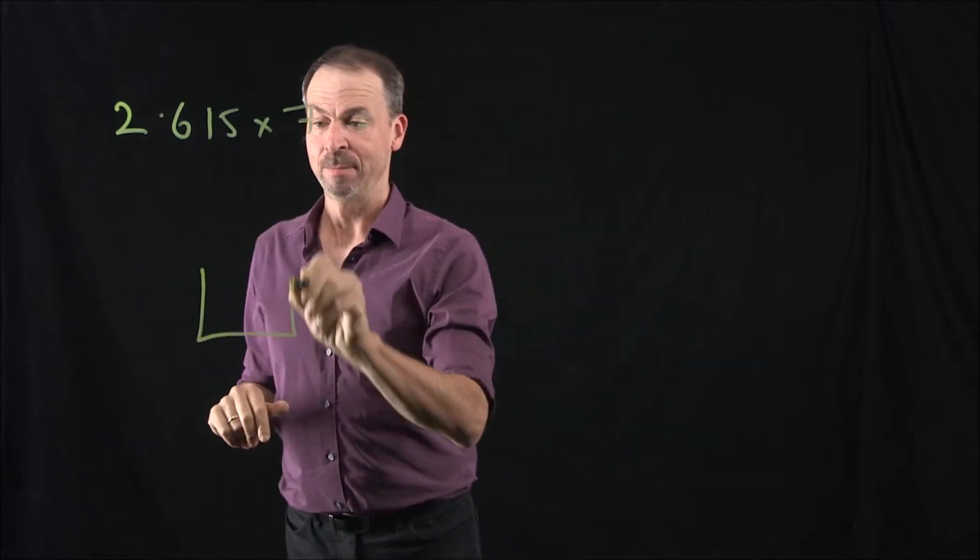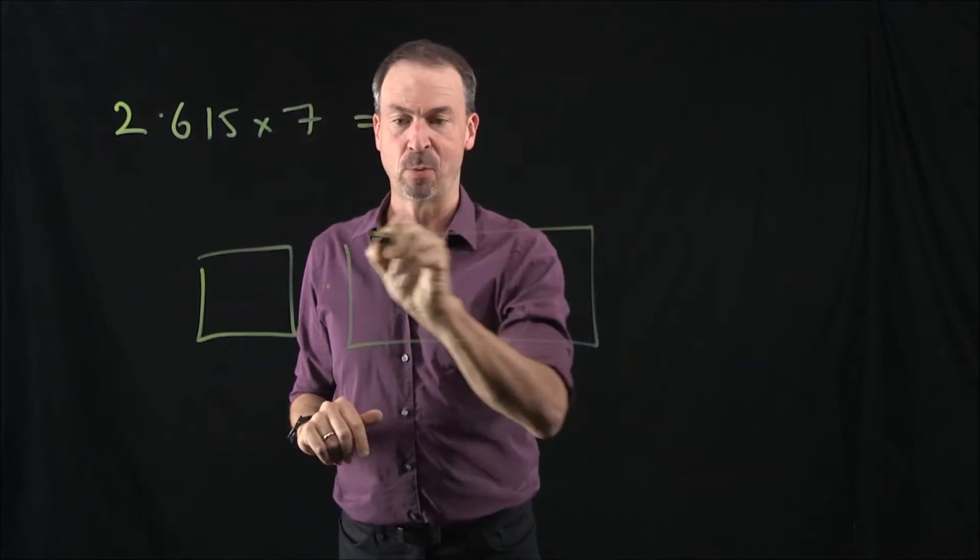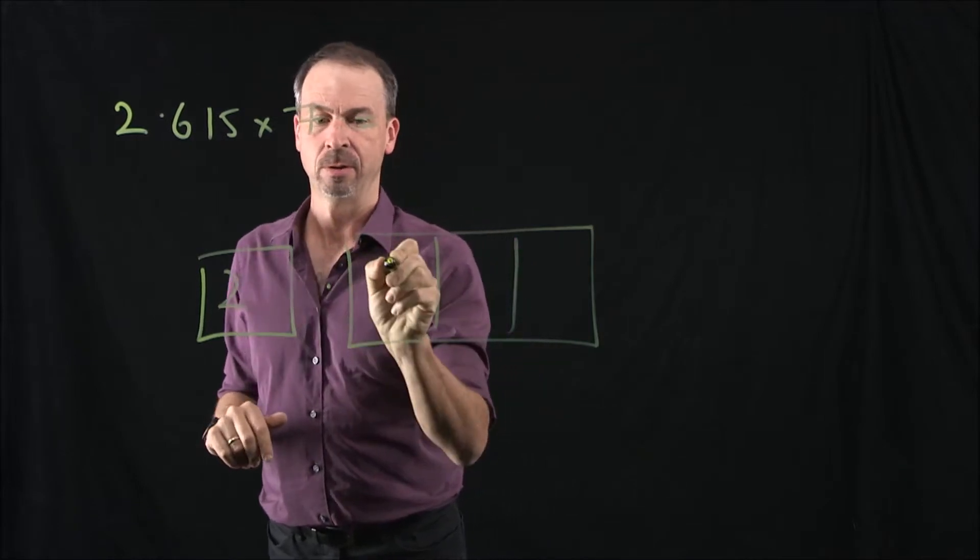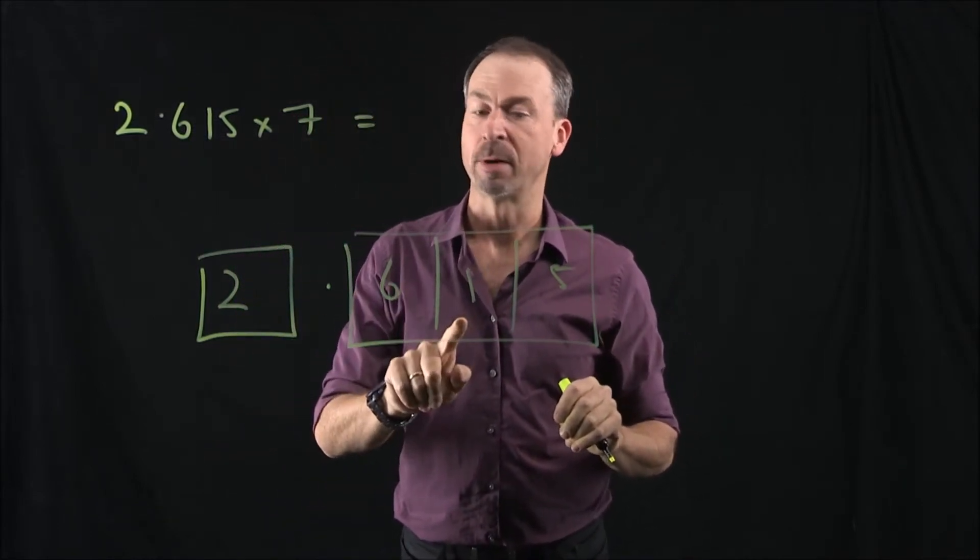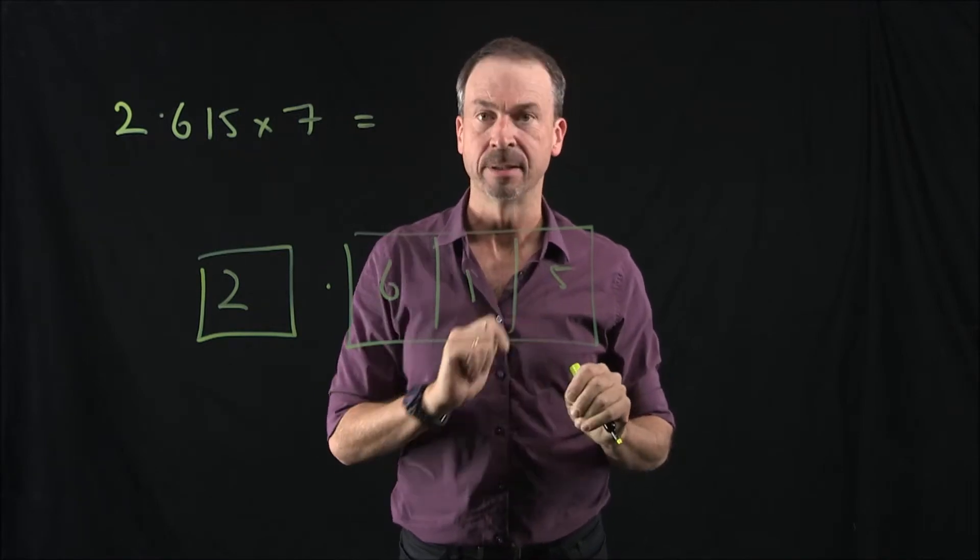Well, let me draw a picture of a 10-1 machine. So here's 2.615: 2, 6, 1, 5. 2 ones, 6 tenths, 1 one hundredth, and 5 thousandths.